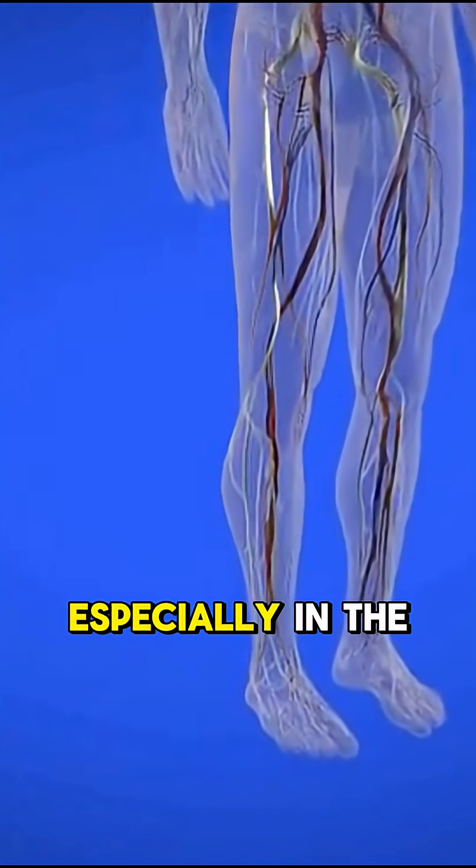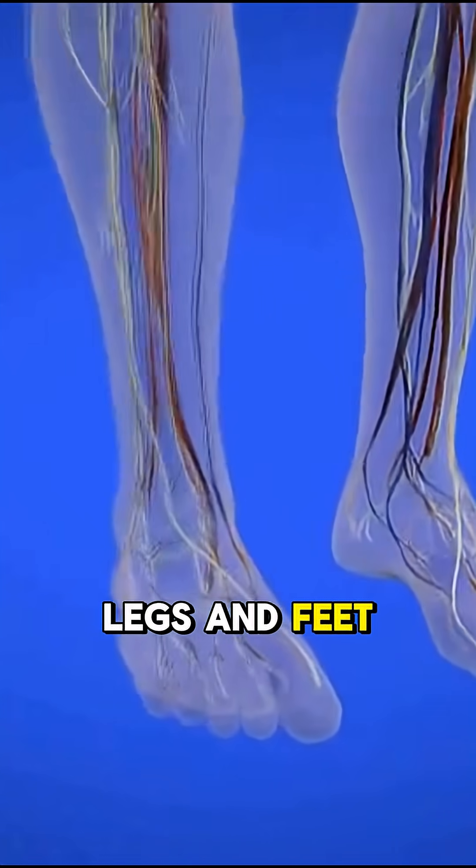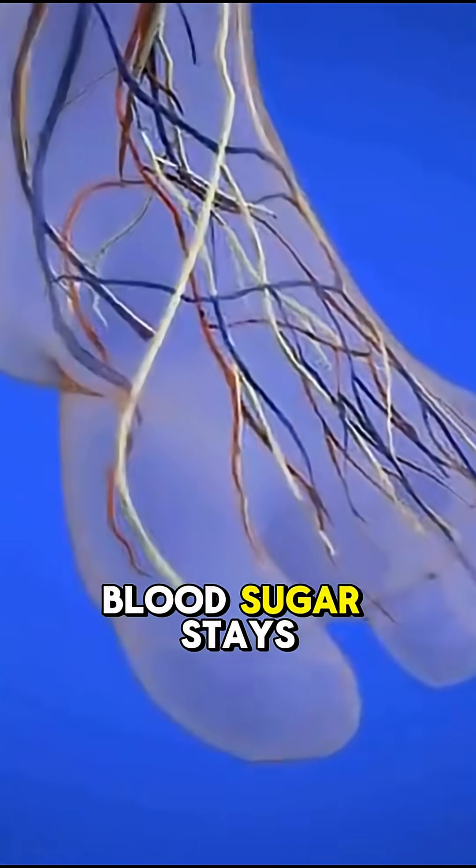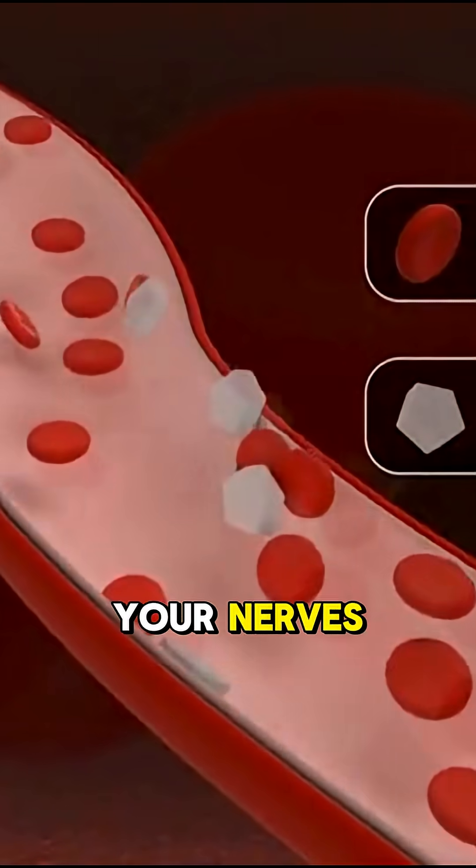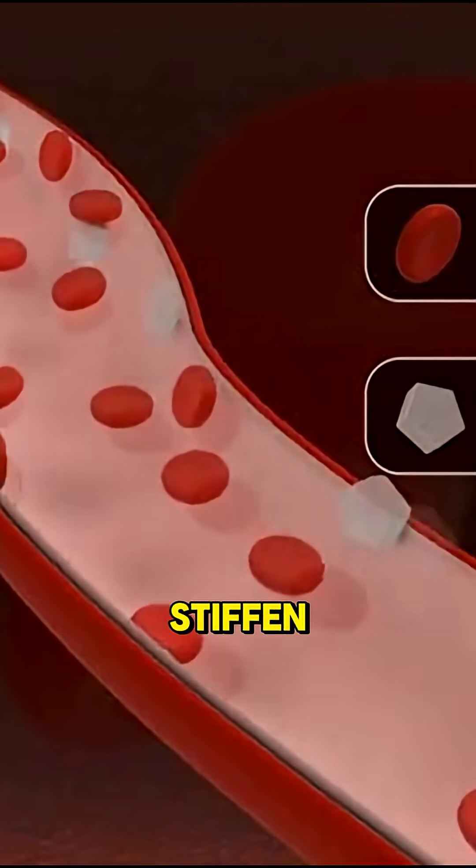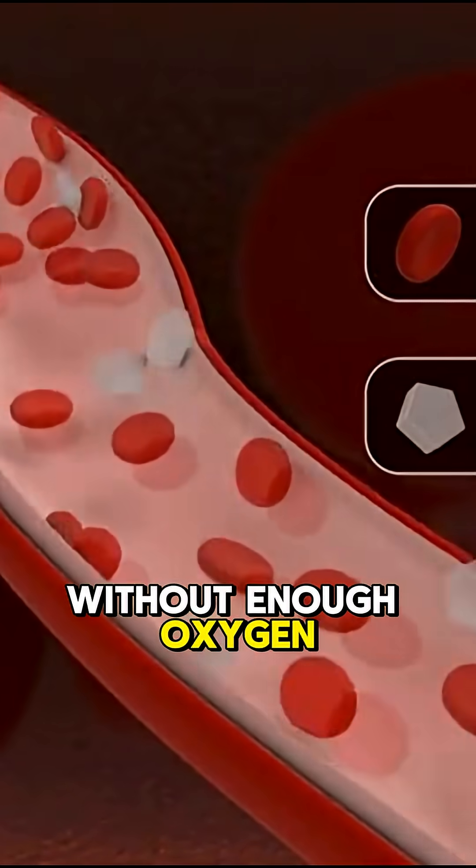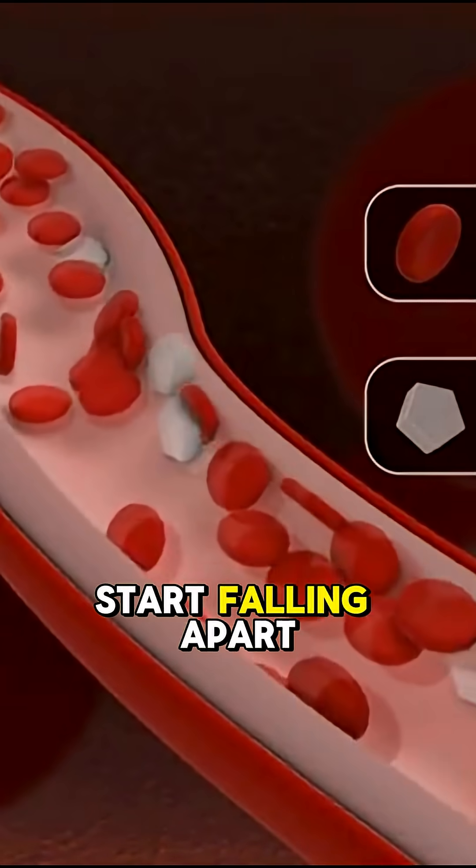It happens to millions, especially in the legs and feet. Why? Because when your blood sugar stays too high, the tiny blood vessels that feed your nerves shrink and stiffen. Without enough oxygen, the nerves literally start falling apart.